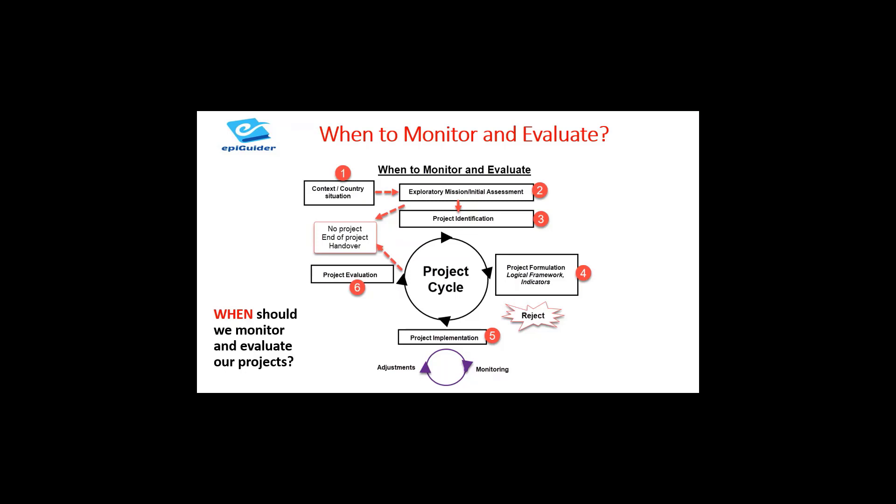This brings us to project identification. Once the project has been identified, it is now time to move to the formulation of the project. The output of this process is a project document. This is where the logical framework and the project indicators are defined.